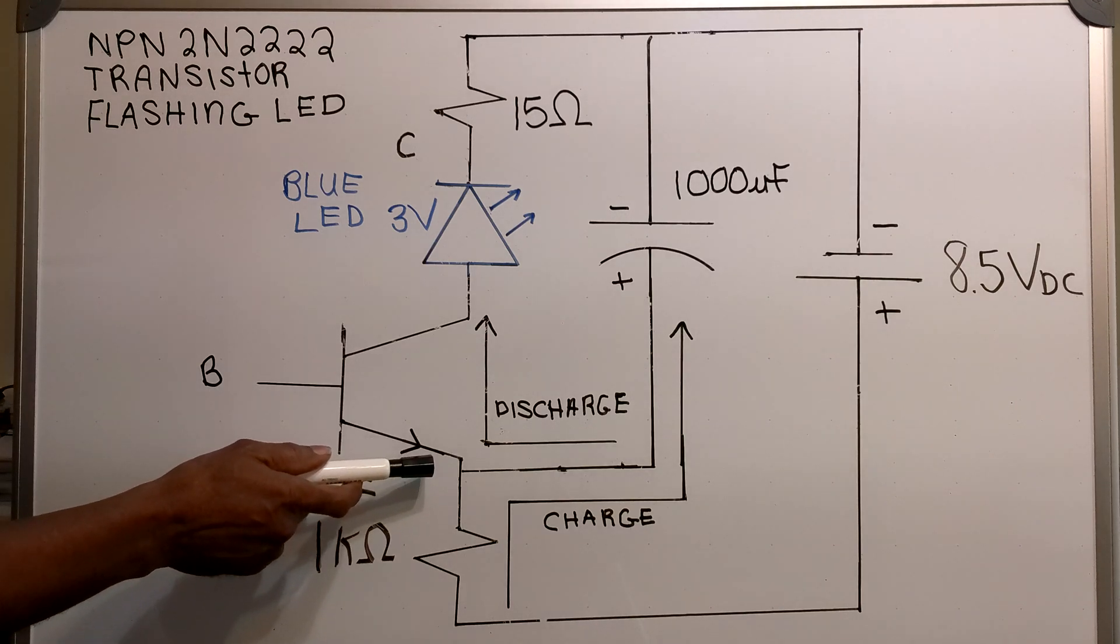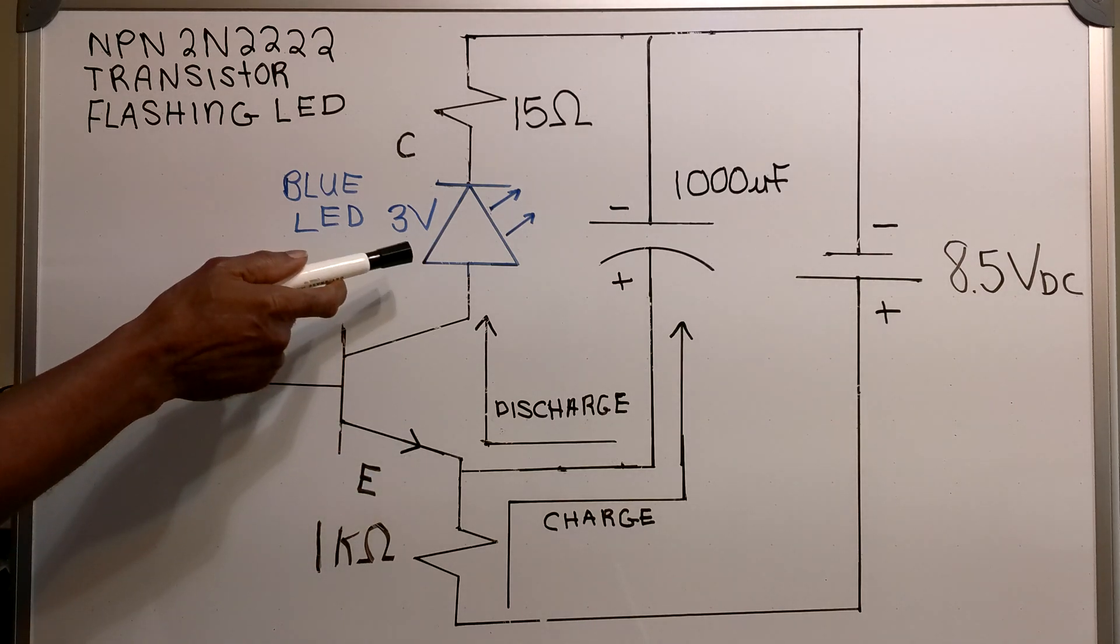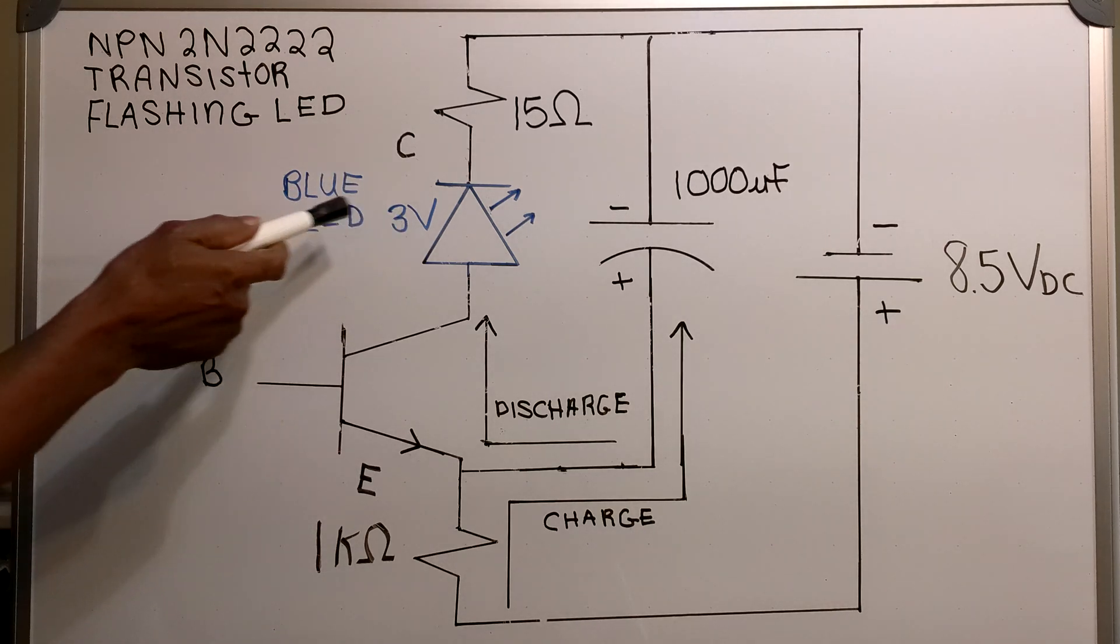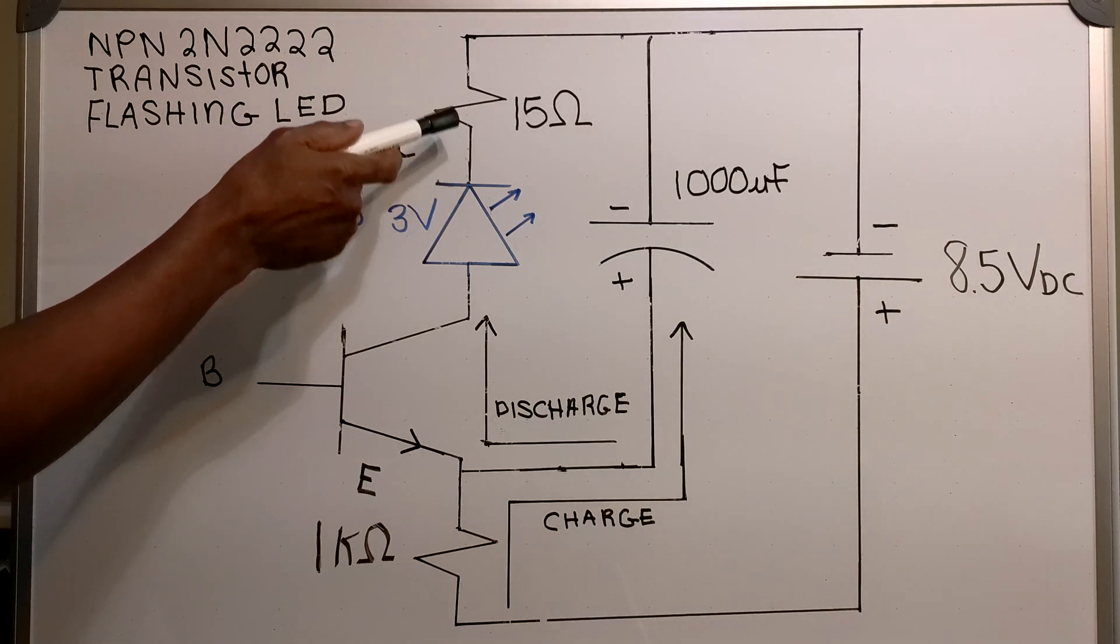Now on the collector side I have a blue 3 volt LED in series with a 15 ohm resistor.